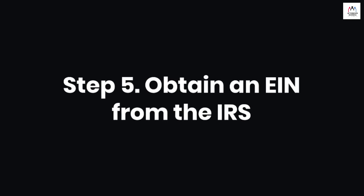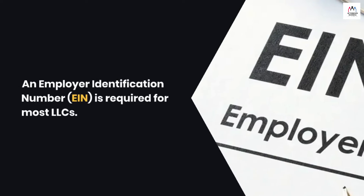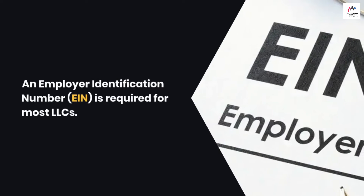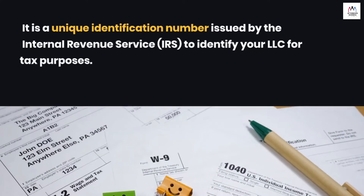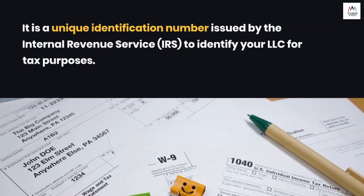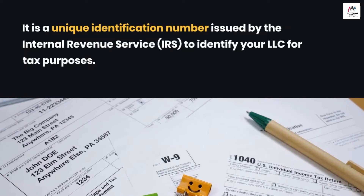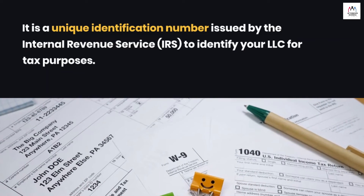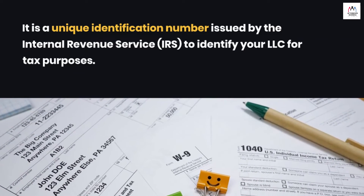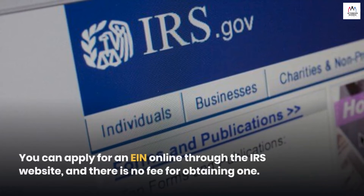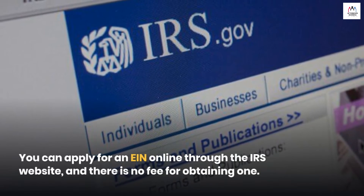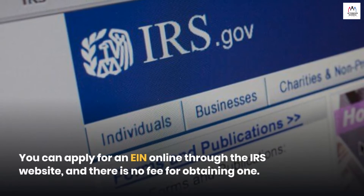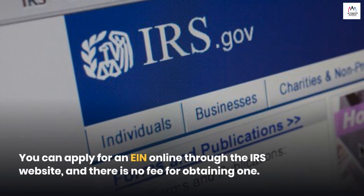Step 5: Obtain an EIN from the IRS. An Employer Identification Number (EIN) is required for most LLCs. It is a unique identification number issued by the Internal Revenue Service (IRS) to identify your LLC for tax purposes. You can apply for an EIN online through the IRS website, and there is no fee for obtaining one.